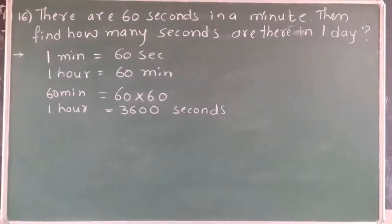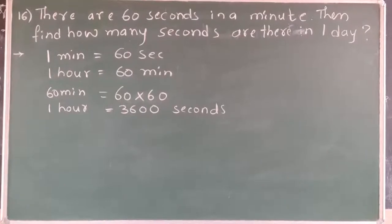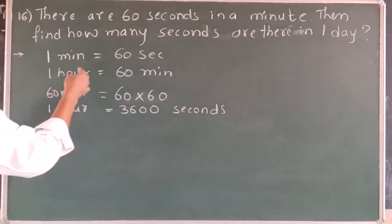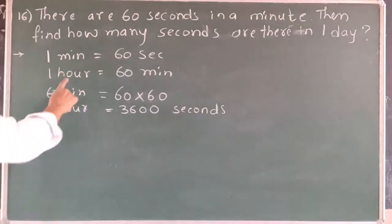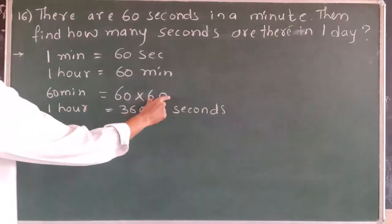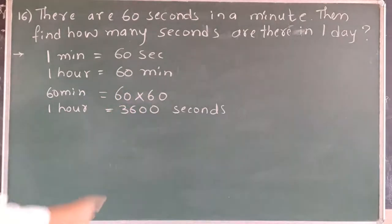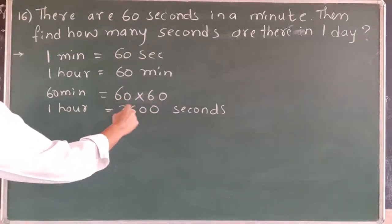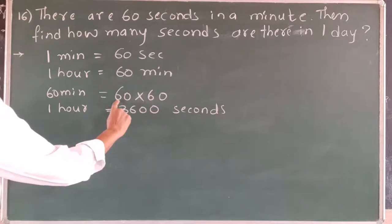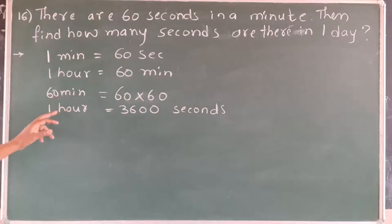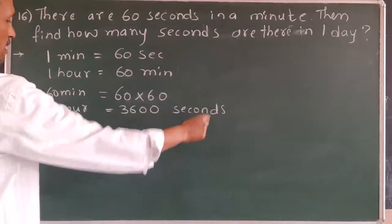Now we will take the 16th problem. There are 60 seconds in a minute. Then find how many seconds are there in one day. One day contains 24 hours. One minute is 60 seconds and one hour is 60 minutes. So 60 minutes multiplied by 60 — if we multiply 60 minutes by 60 seconds per minute, we get total seconds in one hour, which is 3,600. One hour contains 3,600 seconds.